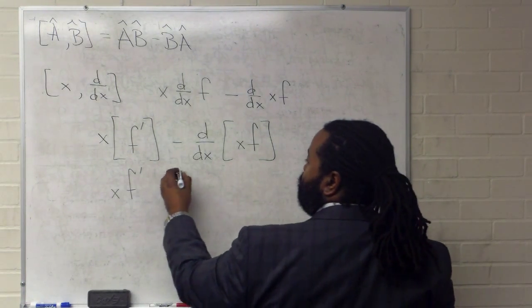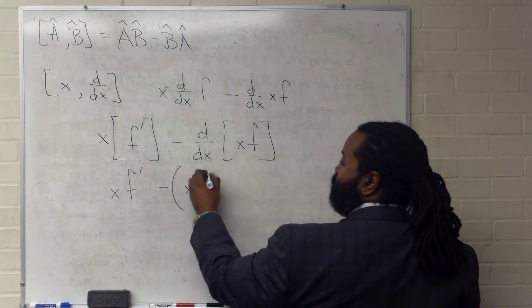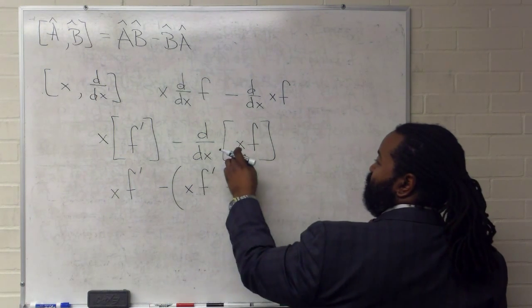And over here, this is a product, so we have to use the product rule. So that is first times derivative of the second plus the second times derivative of the first.